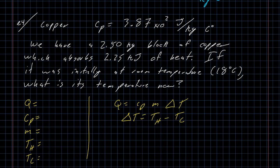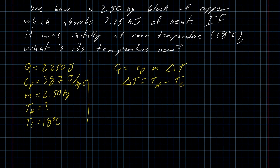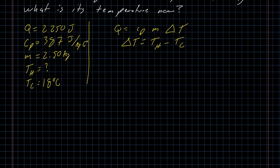Our heat is 2.25 kilojoules. Since our specific heat is in joules per kilogram celsius degree, converting that to joules is probably going to save us a little bit of work later. Our heat capacity is 3.87 times 10 to the second, which I'm just going to write as 387 joules per kilogram celsius degree. Our mass is 2.50 kilograms. Our high temperature is unknown and our low temperature is 18 degrees celsius. That is the information that we need in order to solve.